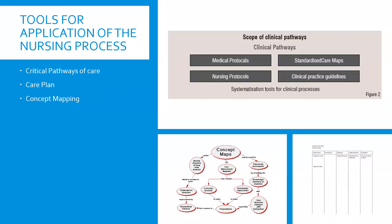Some tools for applying the nursing process include critical pathways of care, care planning, and concept mapping. Critical pathways of care include medical protocols, standardized care maps, nursing protocols, and clinical practice guidelines that help guide our care plans and interdisciplinary collaboration. A care plan is documentation of our application of the nursing process. A concept map is a visual documentation of different aspects of the patient's care to form connections, identify the best points to intervene, and give a holistic picture of what's going on with the patient. That concludes our discussion of the nursing process in psychiatric nursing.